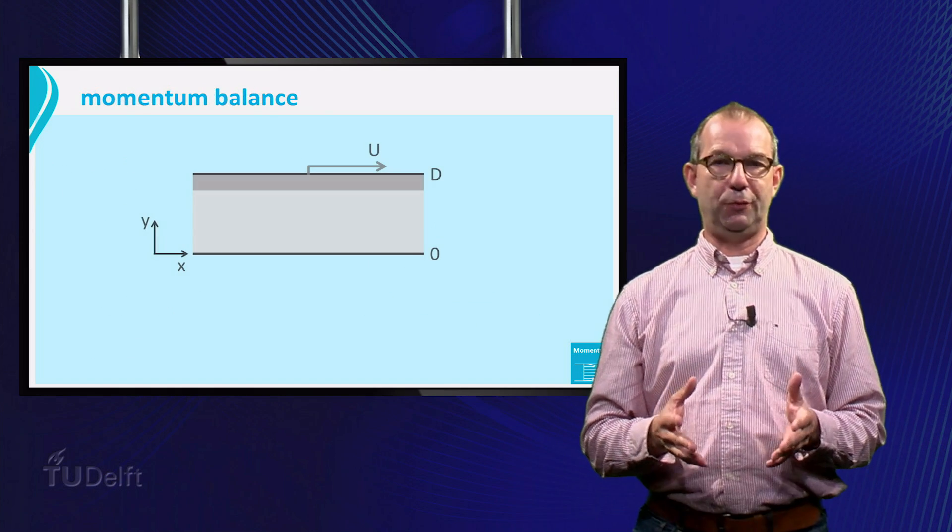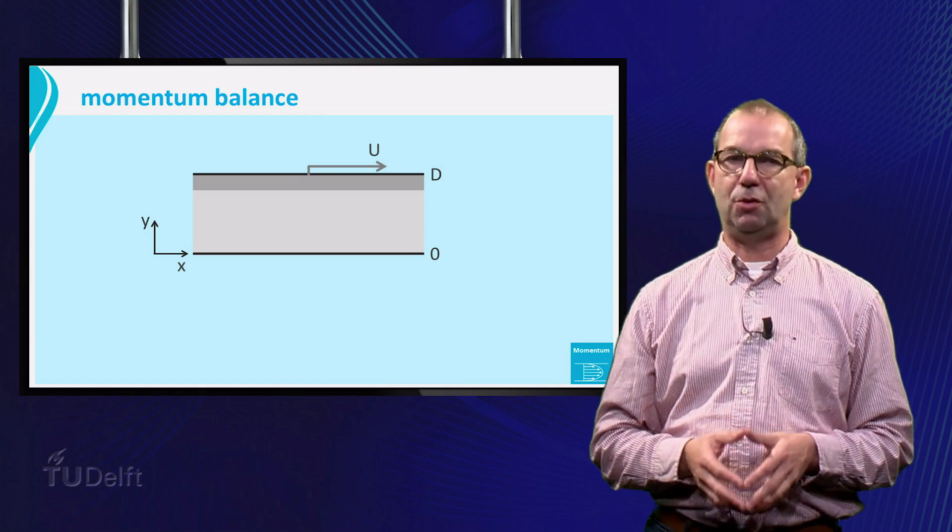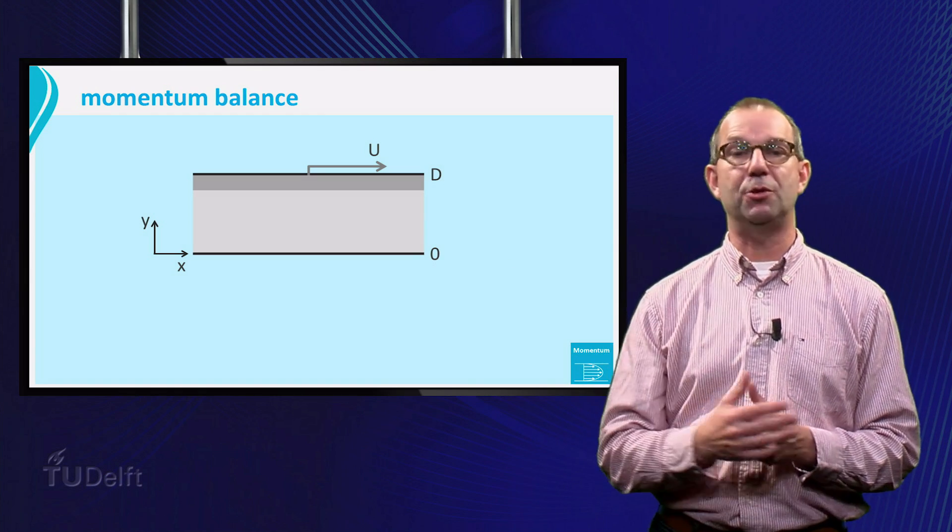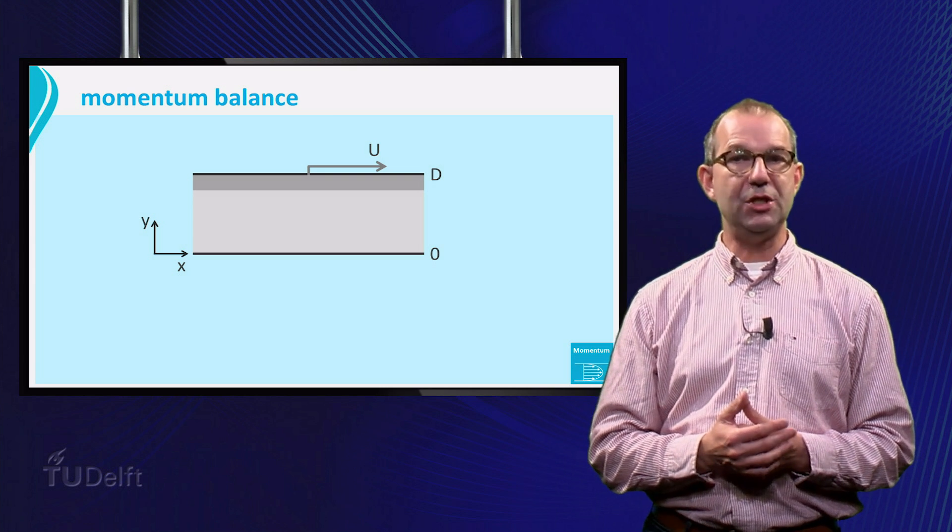Just like we did for diffusion of heat and mass, we can set up a momentum balance for simple flows in simple geometries. We will consider only steady state situations.